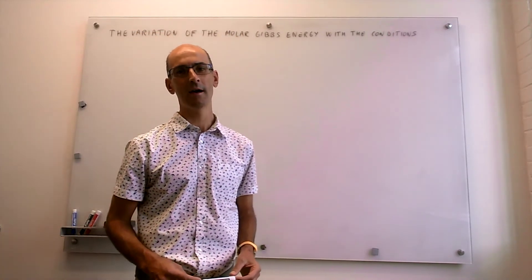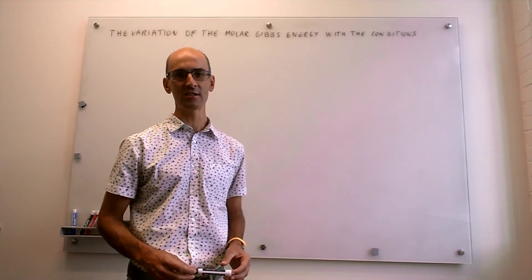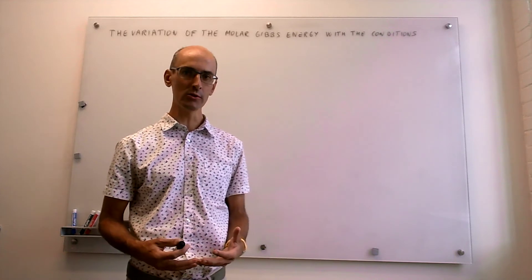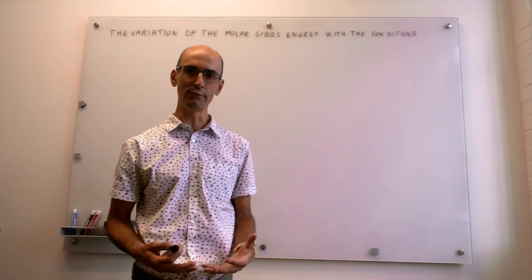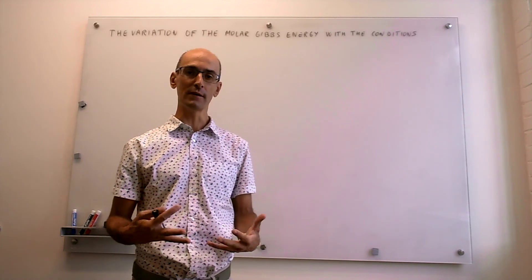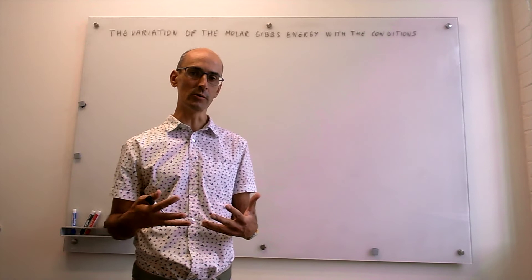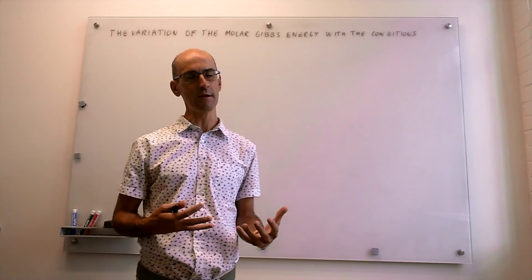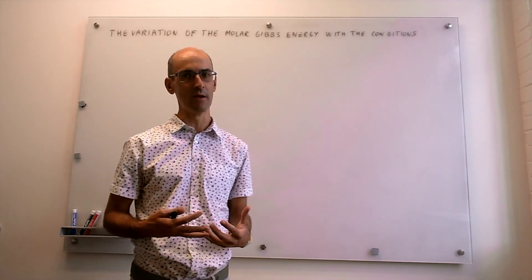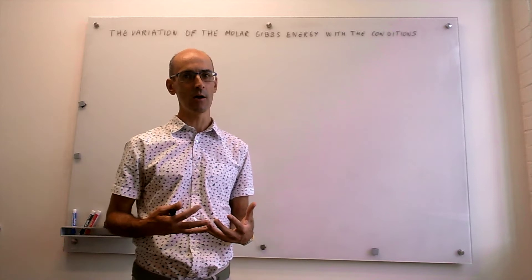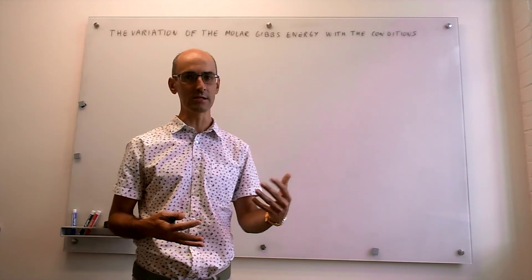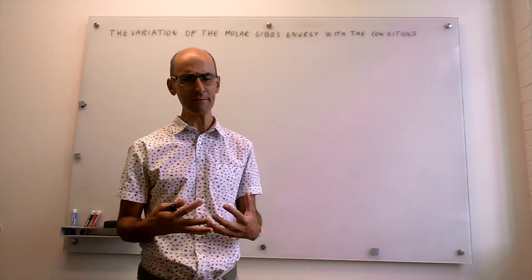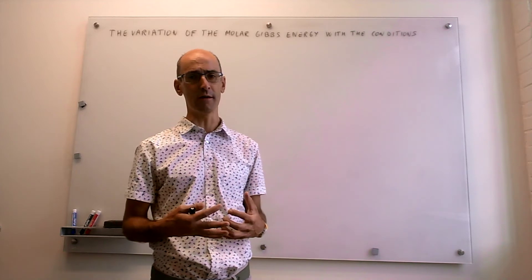In this video, we review how the molar Gibbs energy changes with conditions. As we have seen in the prior video, the molar Gibbs energy controls the stability of a phase. So if you have an equilibrium between two phases, or two phases co-existent, the system will naturally tend to move to the phase of the lowest molar Gibbs energy. It's quite important to understand how the molar Gibbs energy of a substance — say water, CO2, methanol, or a protein solution — changes with the conditions.